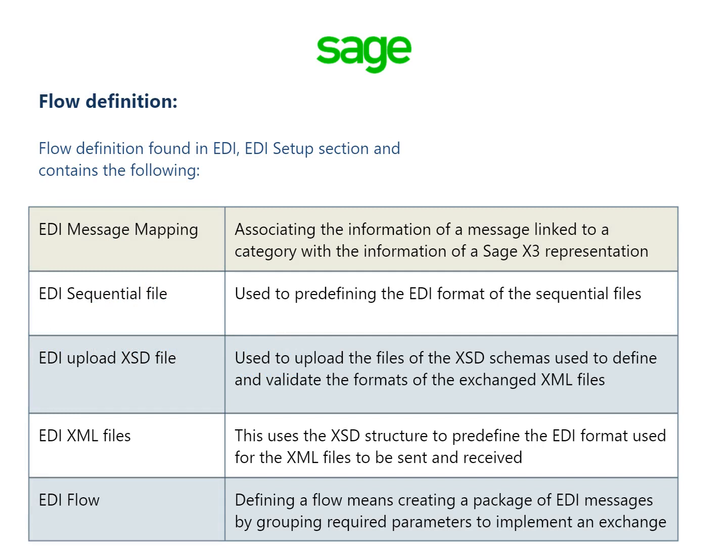The flow definition is found in SAGE X3 EDI setup section and it contains the following: EDI message mapping, which associates the information of a message linked to a category with the information of the SAGE X3 representation; EDI sequential file, used for pre-defining the EDI format of sequential files; EDI upload XSD file, used to upload files of the XSD scheme to define and validate the formats of exchanged XML files; and EDI XML files, which uses the XSD structure to pre-define the EDI format used for XML files to be sent and received.